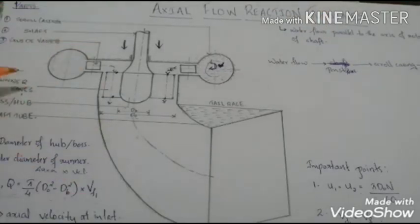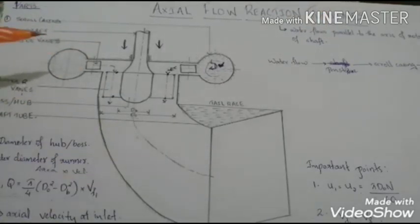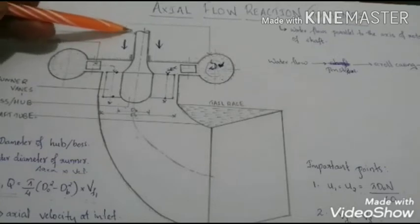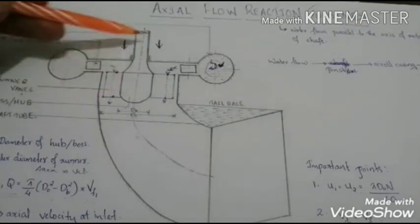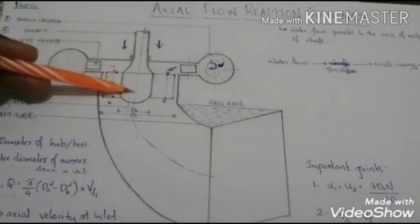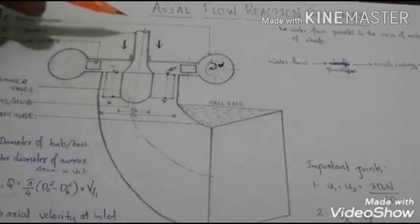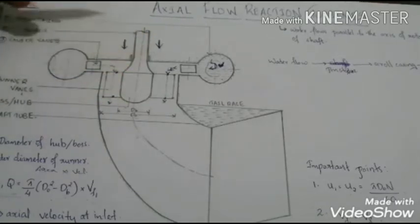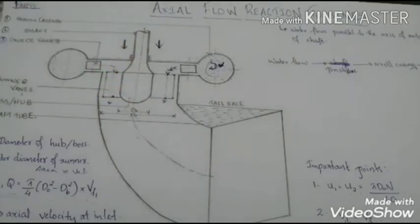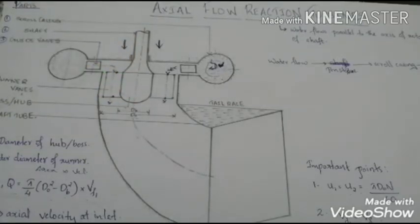So if you look at this diagram, this is how an axial flow reaction turbine looks. Here we have the shaft, this is the axis of rotation of the shaft and it is said that water flows parallel to this axis of rotation. Now let us see how it works.